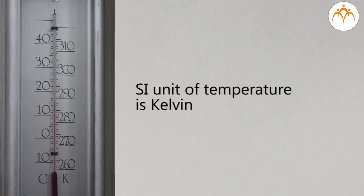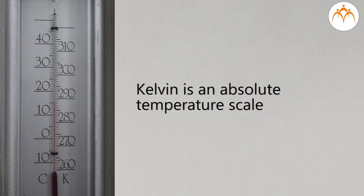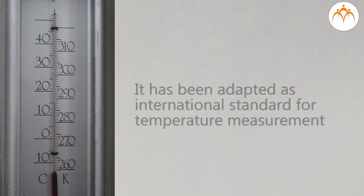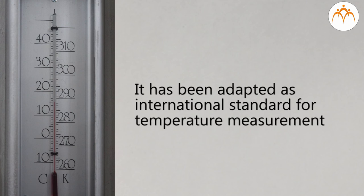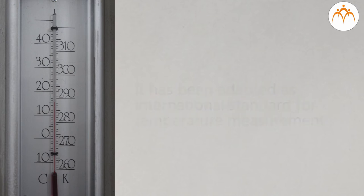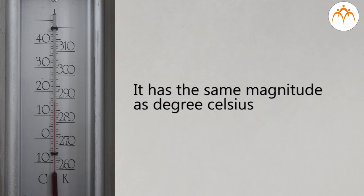The Kelvin temperature scale is the base unit of thermodynamic temperature measurement in the international system. Many physical laws and formulae can be expressed more simply when an absolute temperature scale is used. Accordingly, the Kelvin scale has been adopted as the international standard for scientific temperature measurement. The Kelvin scale is related to the Celsius scale — the difference between the freezing and boiling points of water is 100 degrees in each, so that one Kelvin has the same magnitude as one degree Celsius.